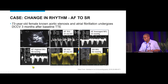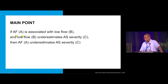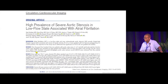There is gross underestimation of aortic stenosis in patients with AFib. If atrial fibrillation is associated with low flow, and low flow underestimates aortic stenosis severity, then atrial fibrillation underestimates aortic stenosis severity. If A equals B and B equals C, then A must equal C.